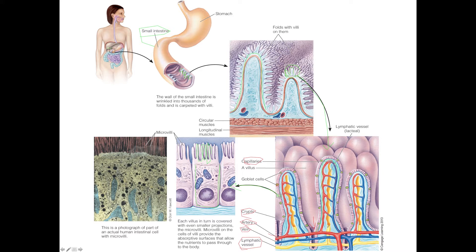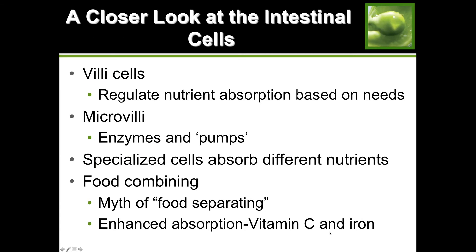The structure in the middle - the yellow - is your lymphatic vessel from your lymph system. We'll discuss why you have these two types of circulatory system in your digestive system. Your villi regulate nutrient absorption based on needs; microvilli have enzymes and pumps; and cells are specialized for absorbing different nutrients.